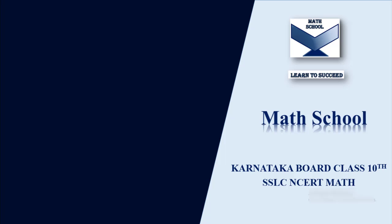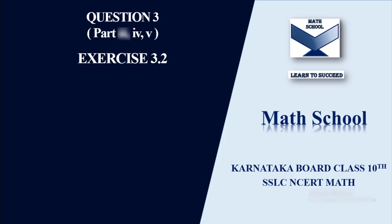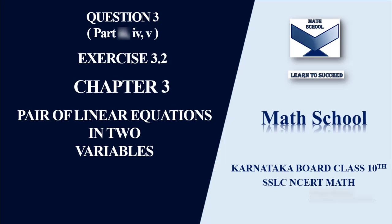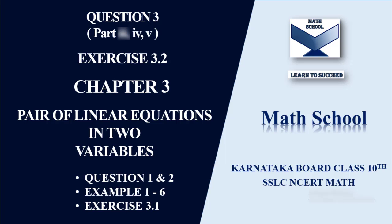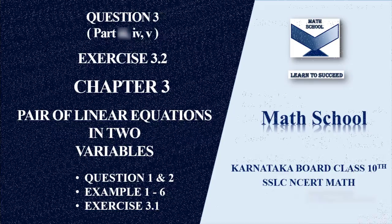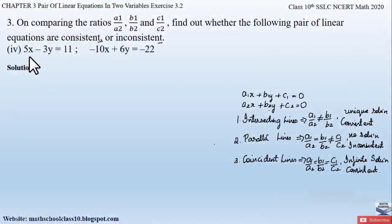Welcome back to my channel Math School. In today's video let us solve question number 3, parts 4 and 5 from Exercise 3.2, Chapter 3: Pair of Linear Equations in Two Variables. In my previous videos I have solved questions 1 and 2, examples 1 to 6, and Exercise 3.1. If you have not watched those videos, do find the link in the description box below. Now let us begin.